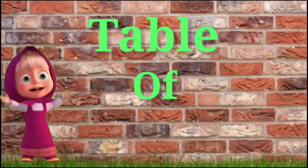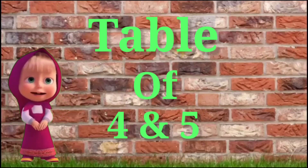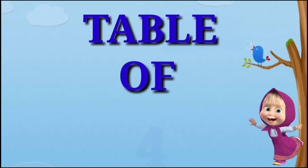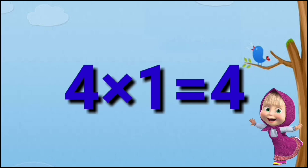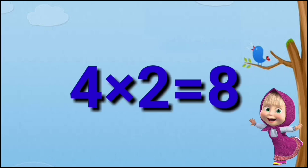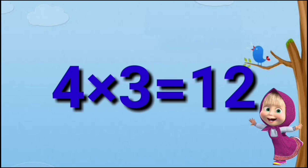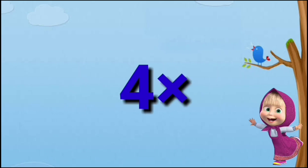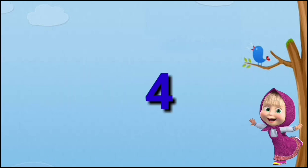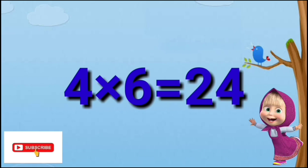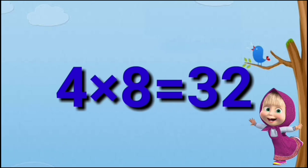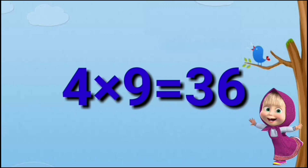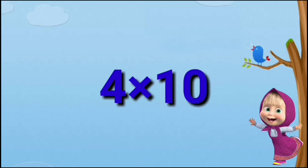Table of 4 and 5. Table of 4. 4, 1's are 4. 4, 2's are 8. 4, 3's are 12. 4, 4's are 16. 4, 5's are 20. 4, 6's are 24. 4, 7's are 28. 4, 8's are 32. 4, 9's are 36. 4, 10's are 40.